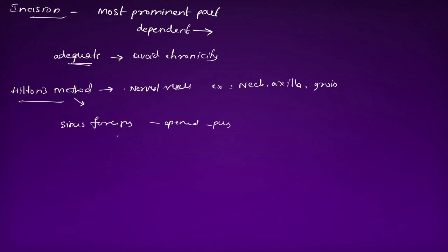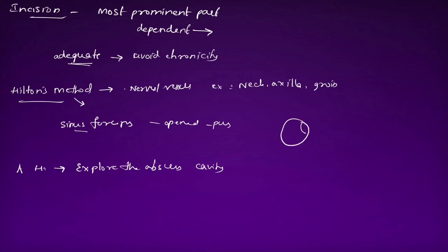After opening the blades, we withdraw the forceps and insert a finger to explore the abscess cavity. All the walls of the loculi are broken by finger exploration, since the abscess may have loculi. All walls must be broken, otherwise it will cause recurrence.